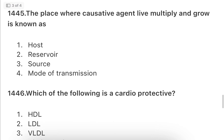Next: The place where pathogenic organisms live, multiply, and grow is known as what? Options: host, reservoir, source, or mode of transmission. The answer is reservoir — this is where the organism multiplies and grows.